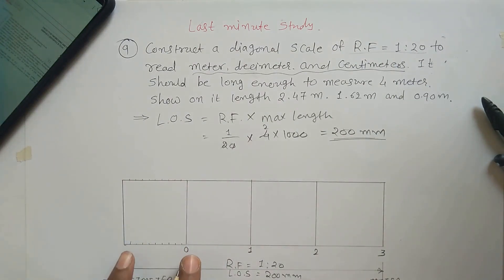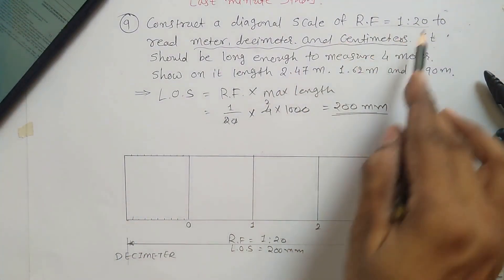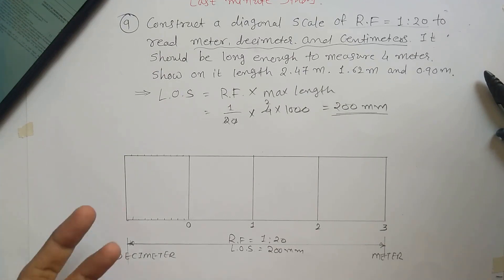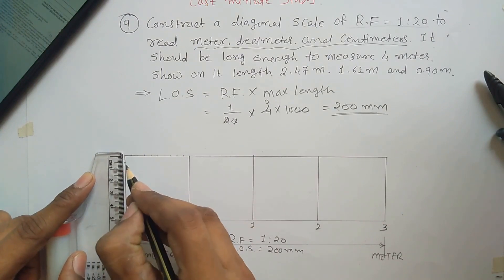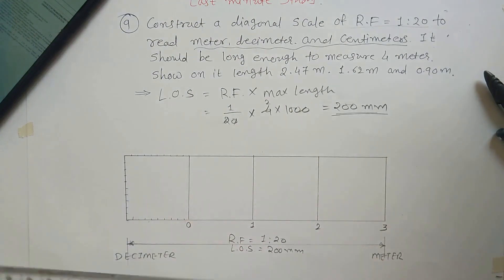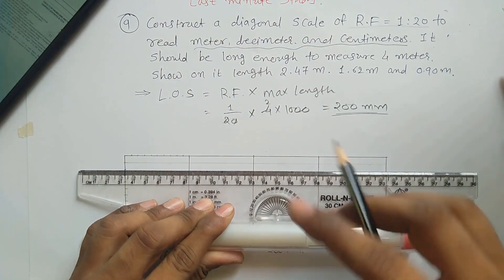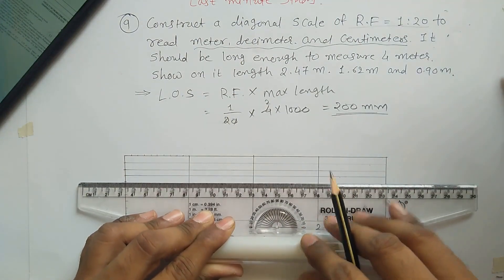Divide the top and bottom edges into 10 equal parts. Don't draw vertical lines yet. These represent decimeters. To measure centimeters, you'd need to divide one decimeter into 10 equal parts, but at 5 mm each that's not accurate enough. So instead, divide this vertical part into 10 equal parts — 5 mm each — and draw horizontal lines from these points. Use very thin lines, as many lines intersect and confusion is easy.